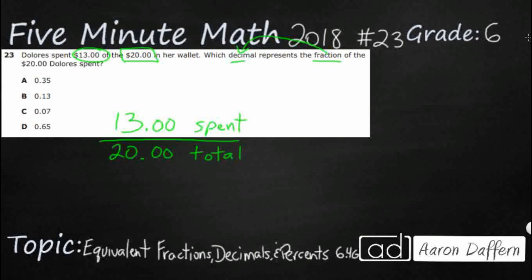Now to make this a little bit easier, let's just write this as 13 over 20. Since we have .00 with each dollar amount, we would need to keep those if there were any cents, but there aren't, so let's just drop it and work with whole numbers — 13 over 20.